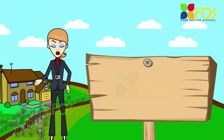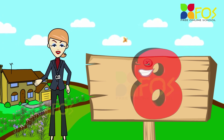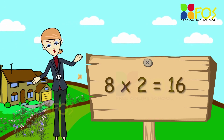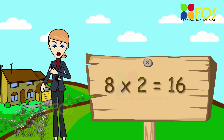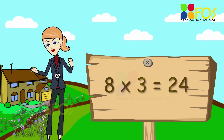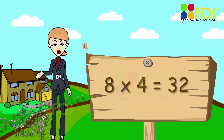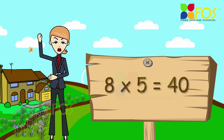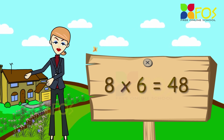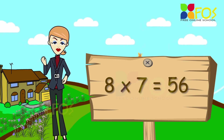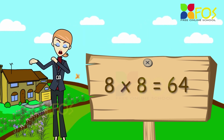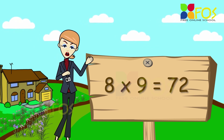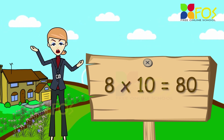Here is the table of 8. 8 1s are 8, 8 2s are 16, 8 3s are 24, 8 4s are 32, 8 5s are 40, 8 6s are 48, 8 7s are 56, 8 8s are 64, 8 9s are 72, 8 10s are 80.